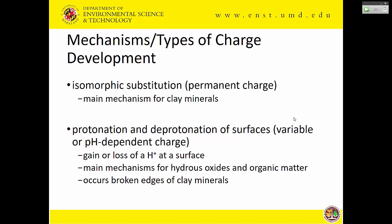Why does soil have charge? There are two kinds. Isomorphic substitution leads to permanent charge — this is where most clay minerals get their charge. It's a substitution of one ion for another while the mineral was forming, not something happening now. Then there's protonation and deprotonation — the gain or loss of hydrogen ions at surfaces — which is the main mechanism for hydroxides and organic matter to get their charge, and also occurs on the edges of clay minerals.